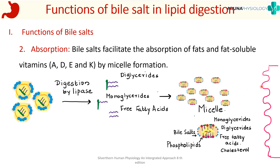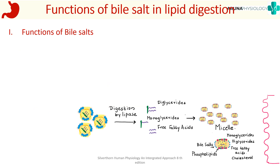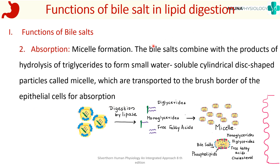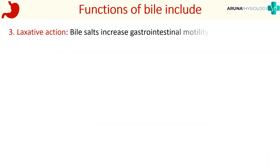These numerous micelles can easily be absorbed across the brush border epithelium — that is called micelle formation. Bile salts combine with the products of hydrolysis of triglycerides to form water-soluble, cylindrical disc-shaped particles called micelles, which are transported to the brush border epithelium cells for absorption. This is how bile salts help in absorption of fat and fat-soluble vitamins.